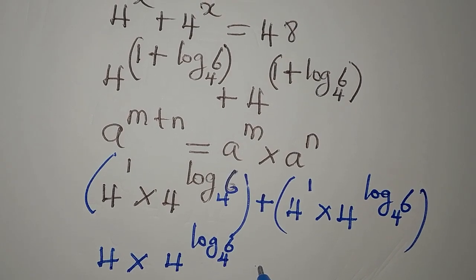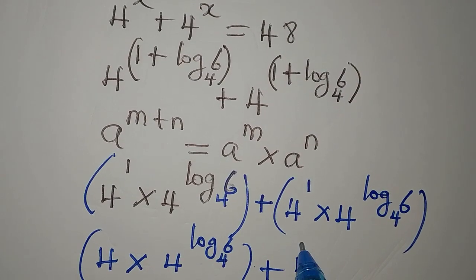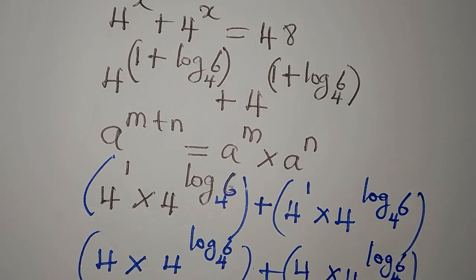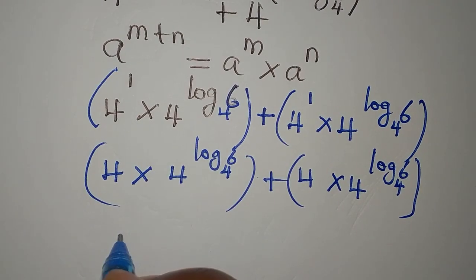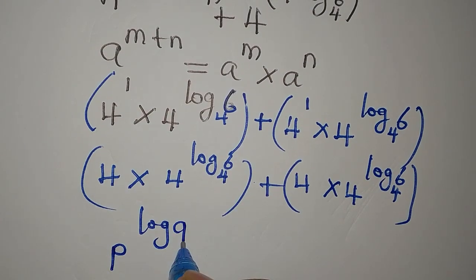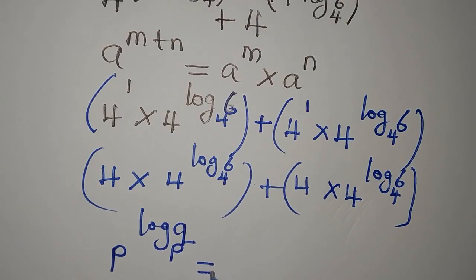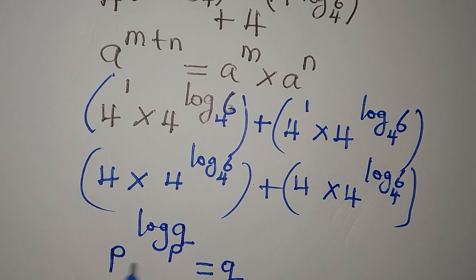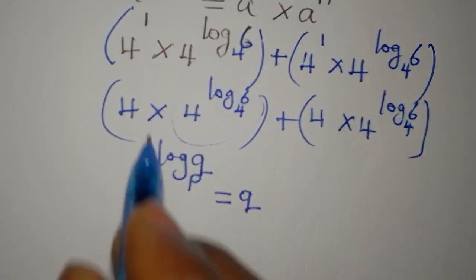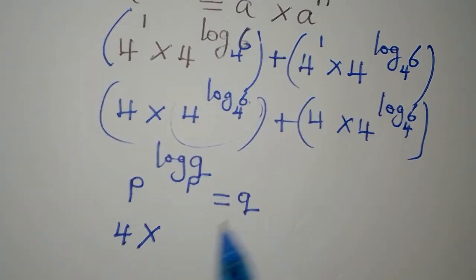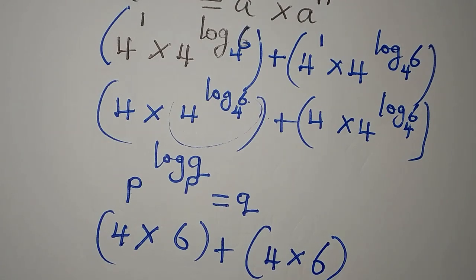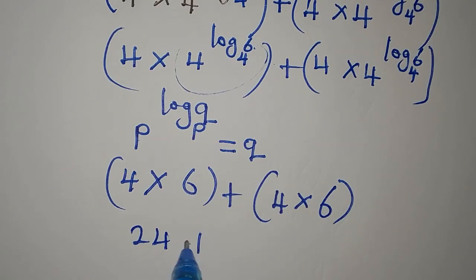So we have 4 times 4^(log₄6) plus 4 times 4^(log₄6). Now there is another law we apply: p to the power of log q to base p equals q. Applying this, 4^(log₄6) equals 6. So we have 4 multiplied by 6, which is 24, plus 4 multiplied by 6, which is 24 again.